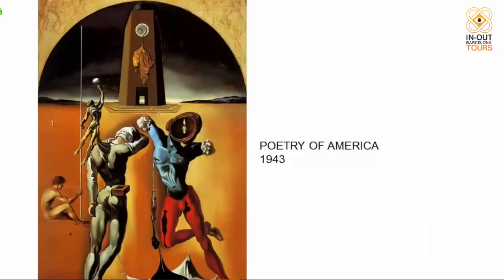We can also see 'Poetry of America' — one of the most important paintings in the museum. He painted it in 1943 while living in the United States. We see an American desert, possibly Arizona, which amazed Dalí when he arrived. Yet in the background, the mountains and landscape are his homeland — even away from his land, he always remembered it. In the middle of the painting is a temple with a clock; clocks always represent the unstoppable passage of time. From the clock hangs the shape of Africa.